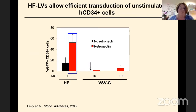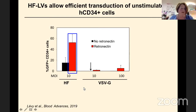Pseudotyped with the hemagglutinin and fusion protein of measles, at low infectivity or low doses we can already achieve up to 70% transduction of hematopoietic stem cells, where the classical VSV-G pseudotype does not perform well at all. It helps when we use a facilitating agent to bring the virus close to the hematopoietic stem and progenitor cells, which are the CD34-positive cells.